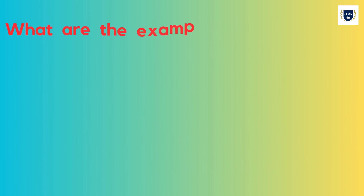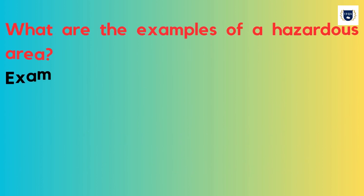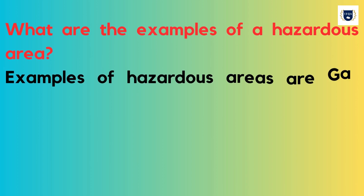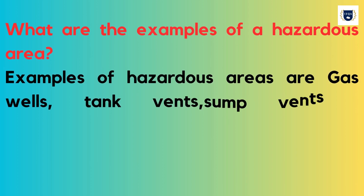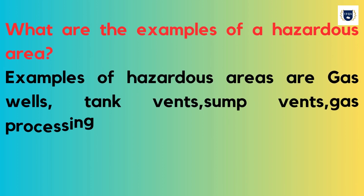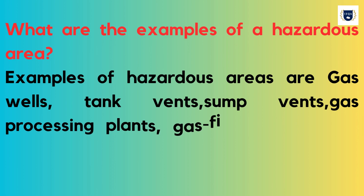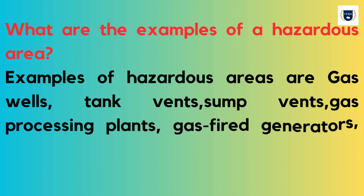What are the examples of a hazardous area? Examples of hazardous areas are gas wells, tank vents, sump vents, gas processing plants, gas-fired generators, etc.